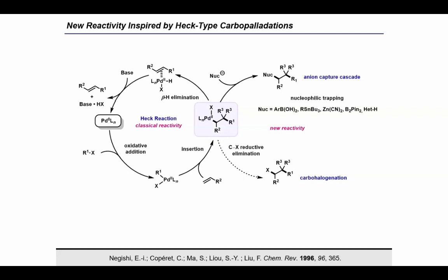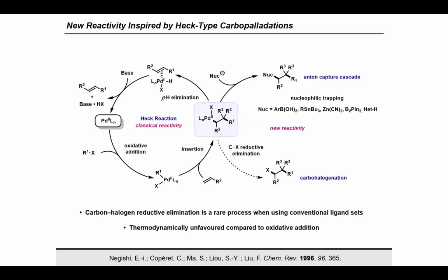So why is this reaction even interesting? Well, carbon-halogen bond productive elimination from palladium-2 complexes is actually a rare elementary process, especially when using conventional ligands such as triaryl phosphines. If you think about it this way, oxidative addition into a carbon-halogen bond constitutes the first step of many palladium-catalyzed cross-couplings and is generally considered to be thermodynamically favorable. Therefore, it should follow that the microscopic reverse — that is, the reductive elimination of carbon-halogen bonds from palladium — should be energetically uphill, and this is particularly true for reactions where a carbon-sp3 halogen bond is formed.